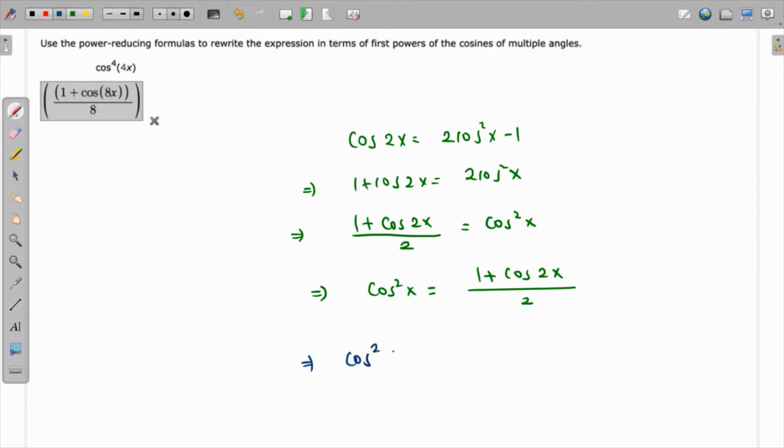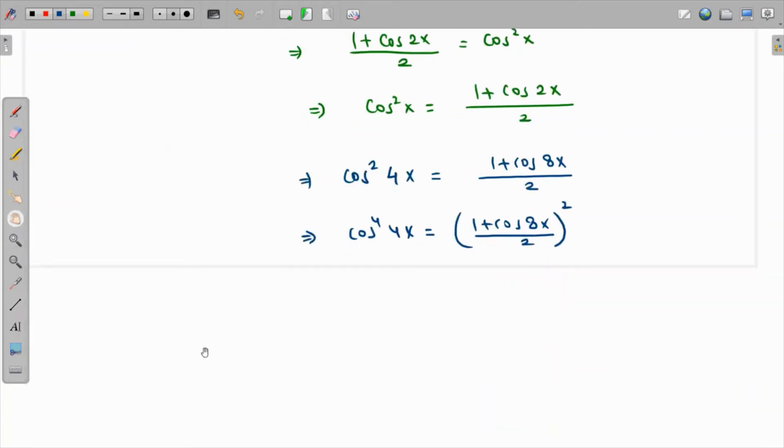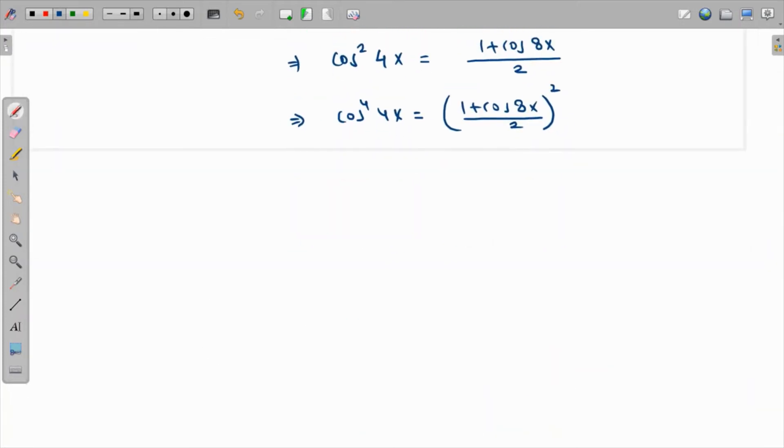Let's square both sides, so we have cos⁴ 4x = ((1 + cos 8x)/2)². Opening up the parentheses, this becomes 1/4 times the expansion. Using (a + b)² = a² + 2ab + b², we get 1 + cos² 8x + 2cos 8x.